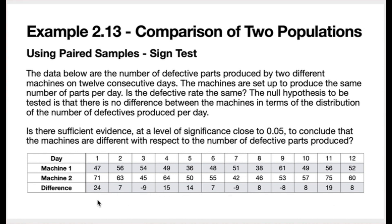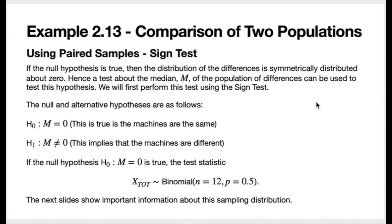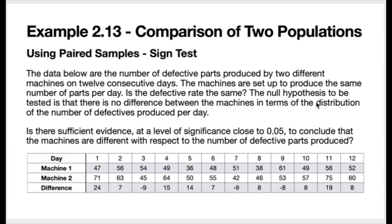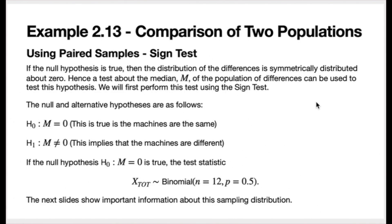You might analyze this data yourself with your calculator or with SAS. If the null hypothesis is true — if the distribution of defective parts produced by the machines is the same — then the distribution of differences will be symmetrically distributed about zero. We can perform a test about the median of the population of differences. Using the sign test, we denote the median of the population of differences by cap M. The null hypothesis is that cap M equals zero, equivalent to the machines being the same.